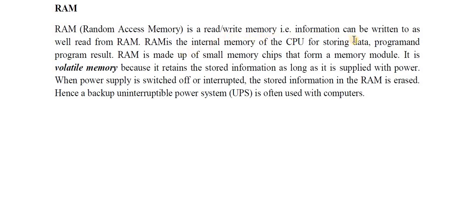RAM is volatile memory — meaning it is temporary. Whenever power supply goes off, data or information stored in RAM is erased. Hence, a backup using an Uninterruptible Power Supply (UPS) is used with computers. Currently running programs are stored in RAM, so whenever power goes off those programs are lost. That is why you should have a UPS, so you can save and complete the currently running process.